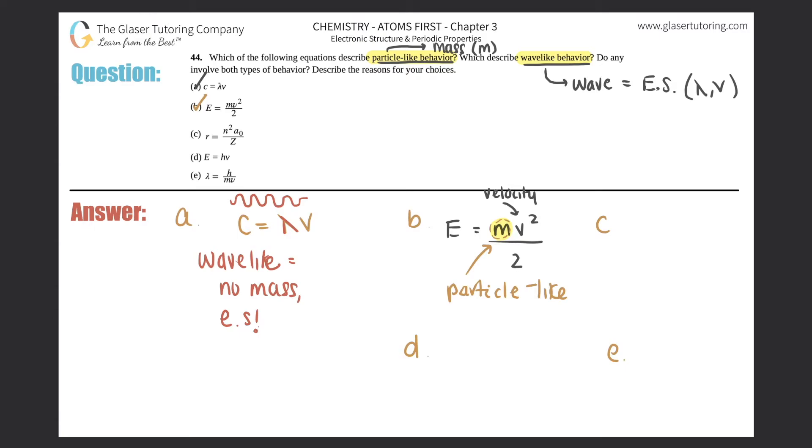But C. R equals n squared a zero over z. This one's tricky, right? There's nothing that tells me that there's a mass. There's no m. And nothing that tells me that it's a wave, kind of like wavelength or frequency. But we've seen this formula before.